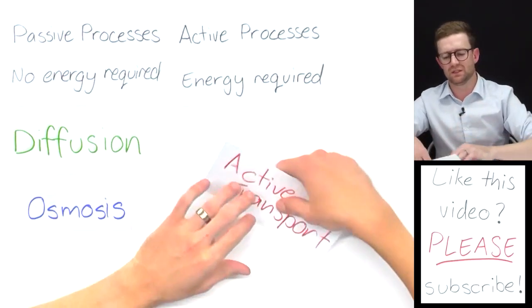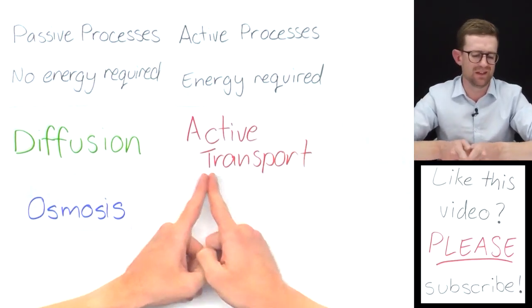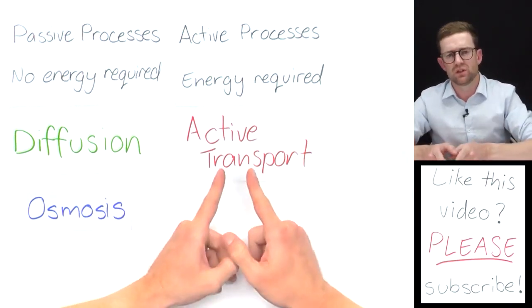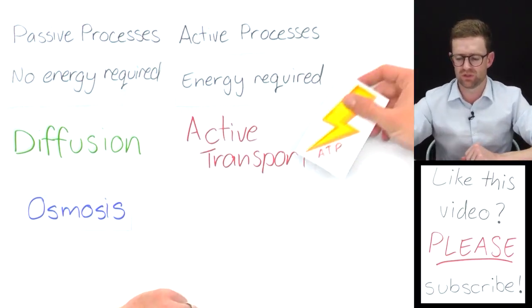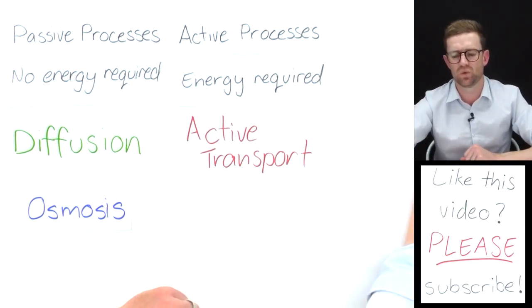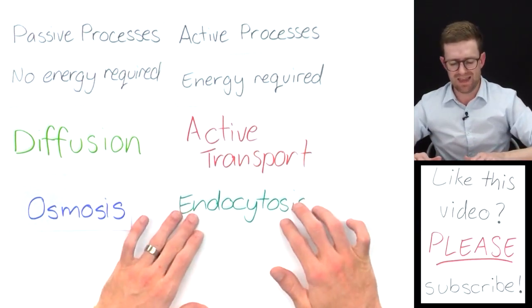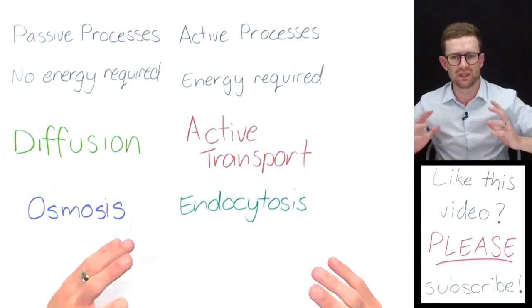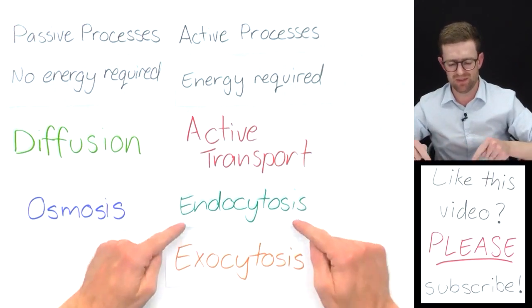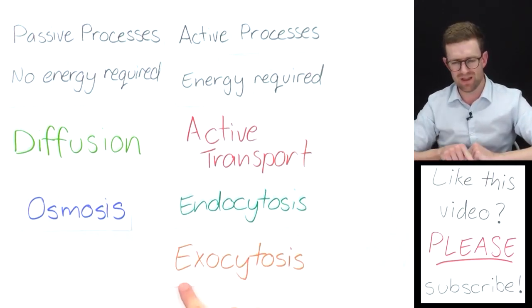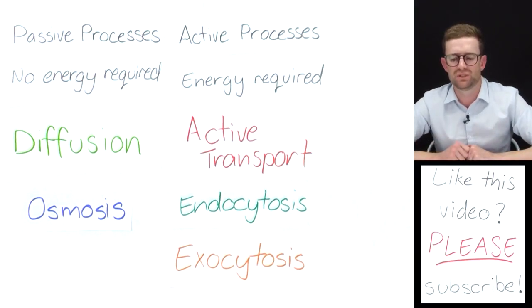Examples of active processes are things like active transport. You might have heard me talk about it being the opposite of diffusion. Things moving from a low concentration to a high concentration, and energy in the form of ATP is required to make that happen. Some other processes are things like endocytosis for large molecules and exocytosis. These are to do with moving into the cell and out of the cell. Again, there are videos describing those in more detail.